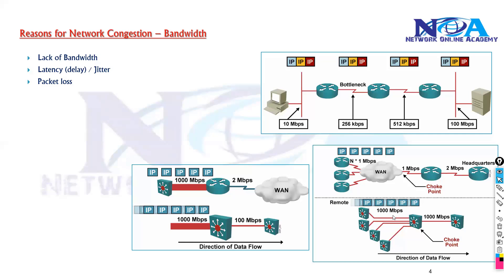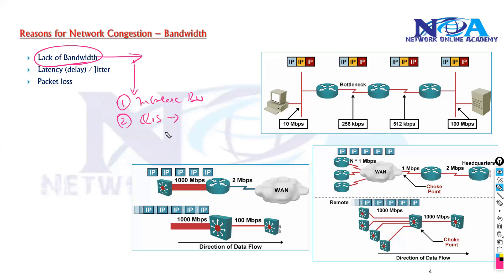These are some of the reasons for congestion. The main reason is not having enough bandwidth. To overcome this, there are two possible ways: either go ahead and increase the bandwidth, which is not always possible, or implement some kind of quality of service where we can give priority to certain traffic. For example, VoIP, telepresence, or video conferencing traffic should be prioritized, while FTP traffic can be restricted to not use more than 256 Kbps.